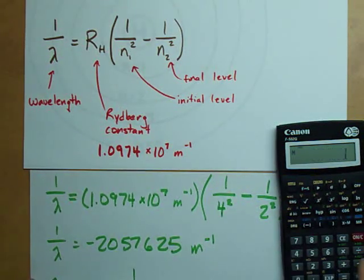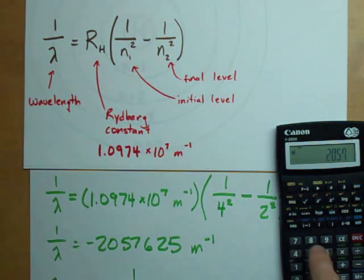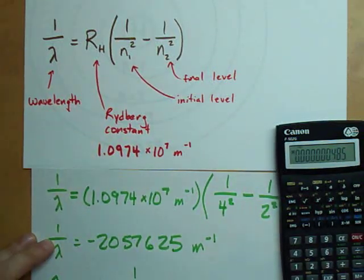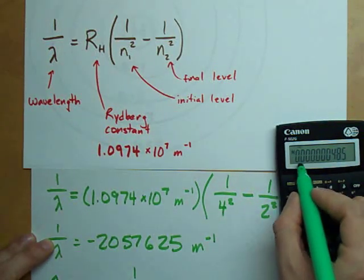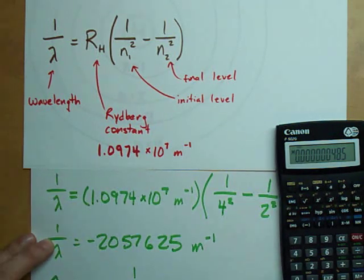When I do that, 1 divided by answer. Do I have an answer key on here? I'll just type it. Negative, oh that's 2057625. I got that.